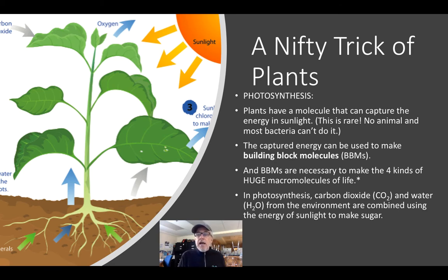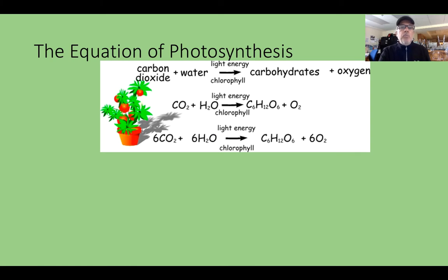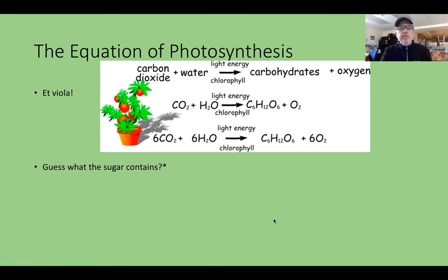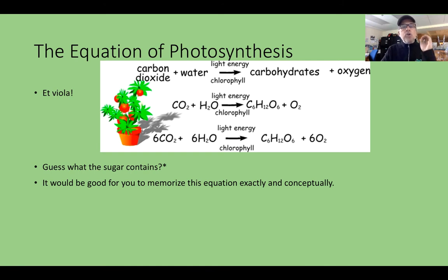In photosynthesis, carbon dioxide and water taken up from the environment are combined using the energy of sunlight to make sugar. Carbon dioxide plus water uses light energy to make carbohydrates and oxygen. More exactly: six carbon dioxide and six water are combined using light energy captured by chlorophyll into one molecule of glucose and six molecules of oxygen. The sugar contains some of the energy that was in the light. You should memorize both the conceptual and the chemical form of this equation.